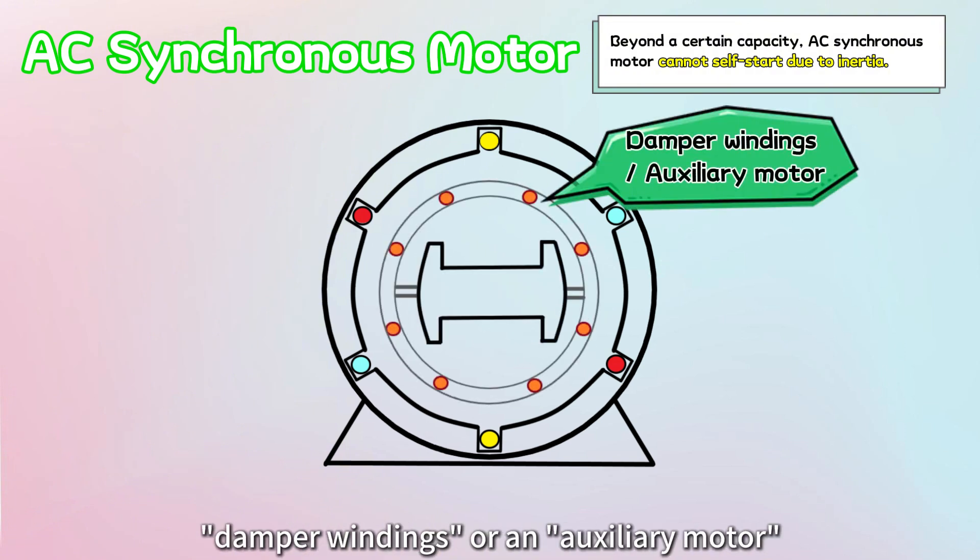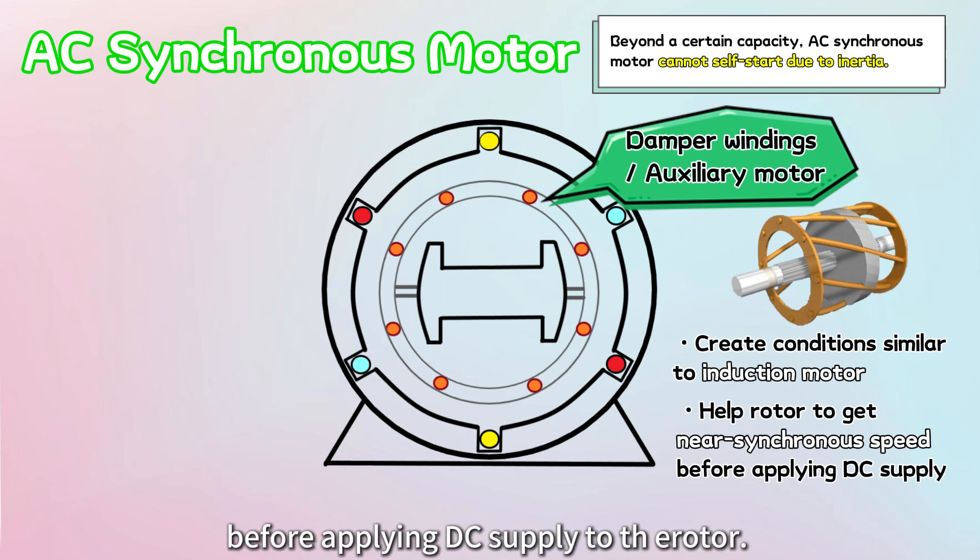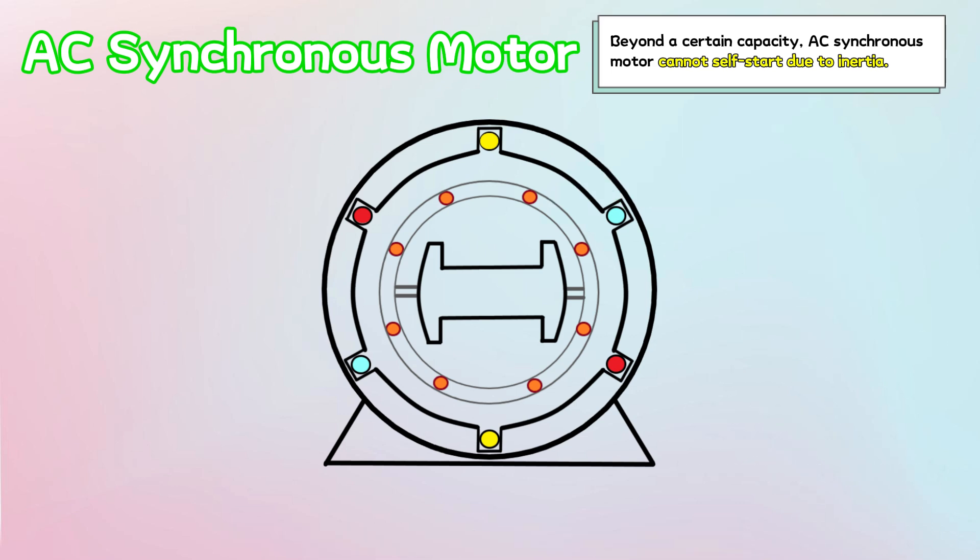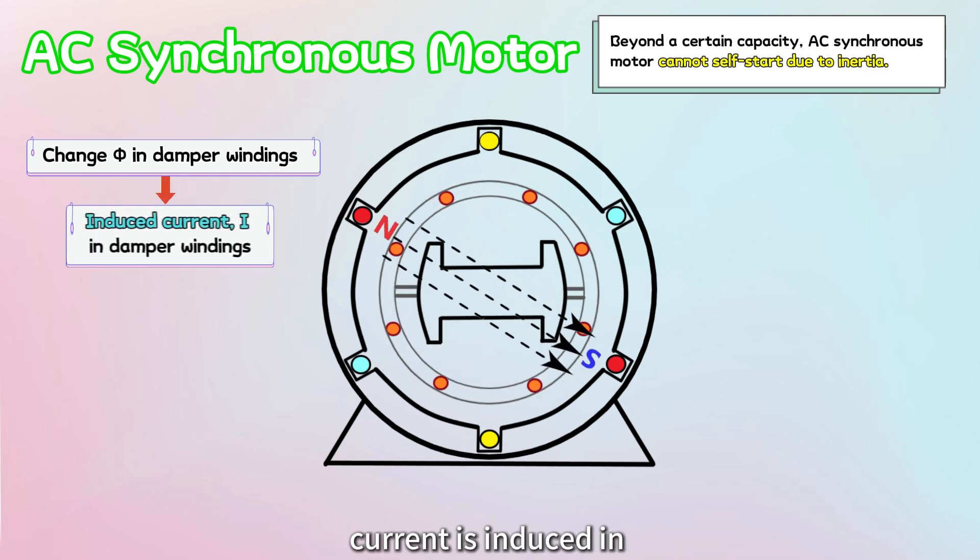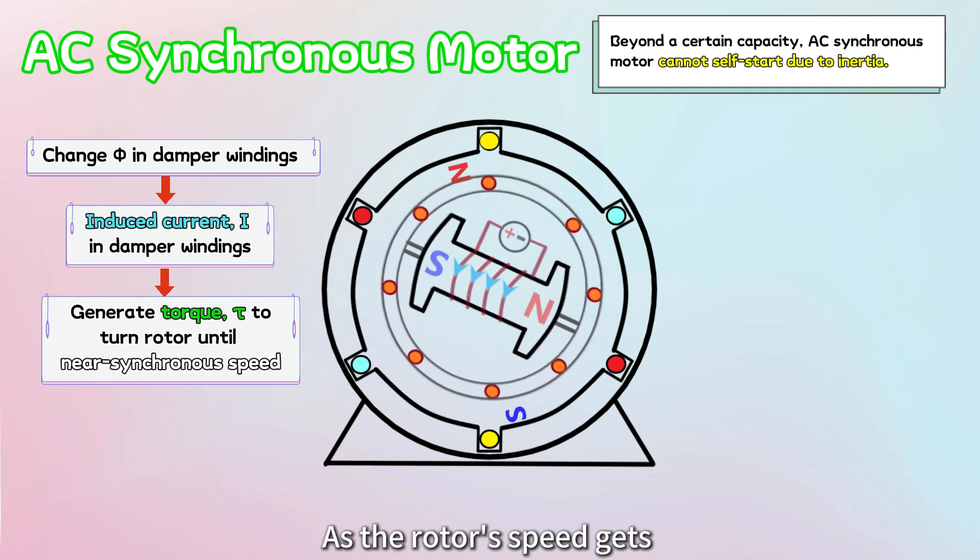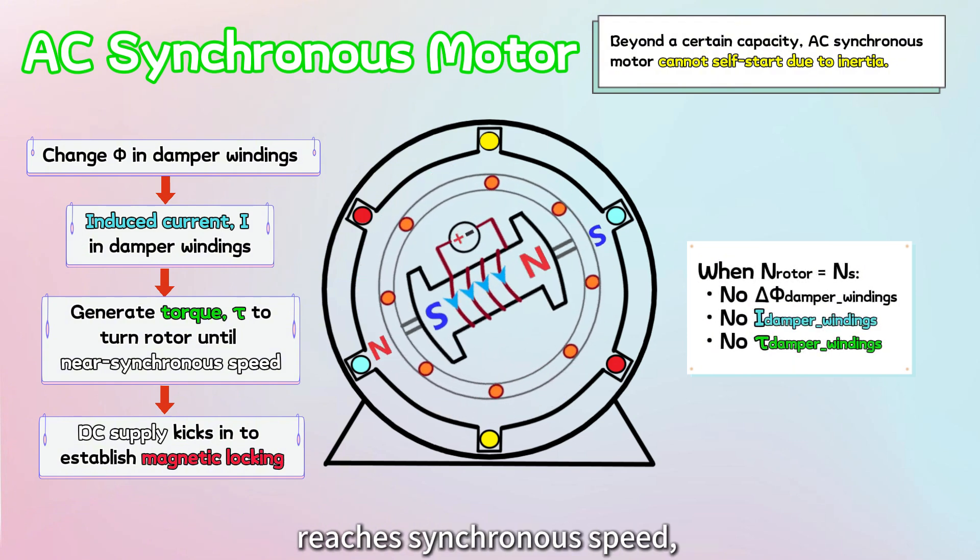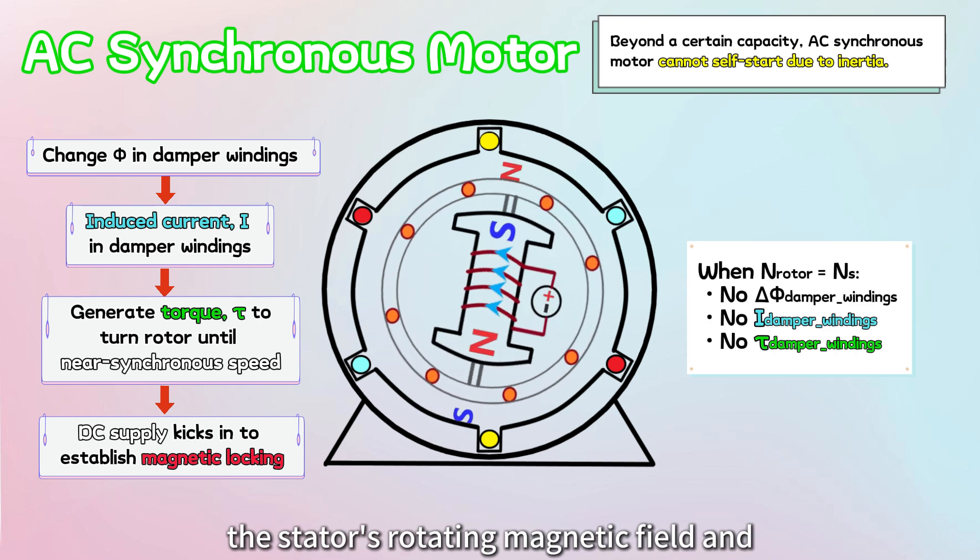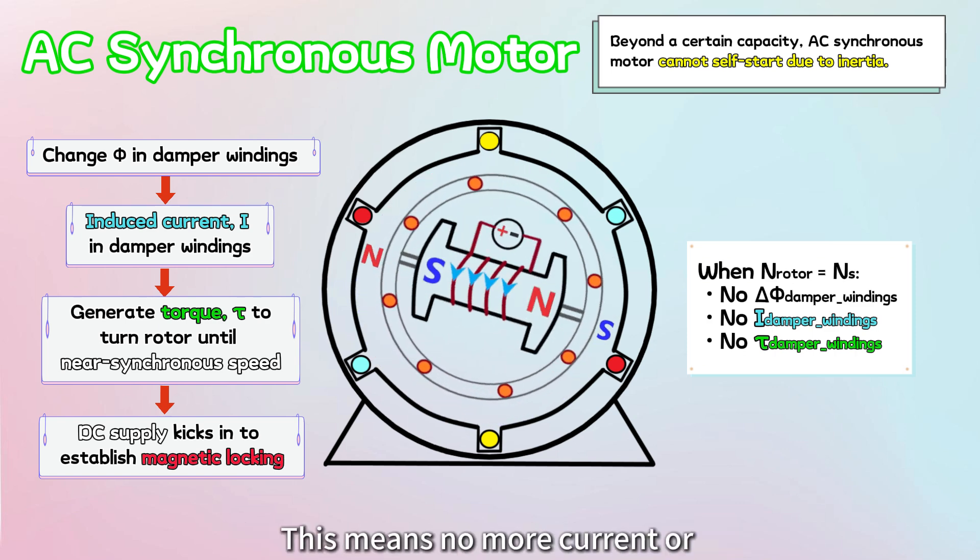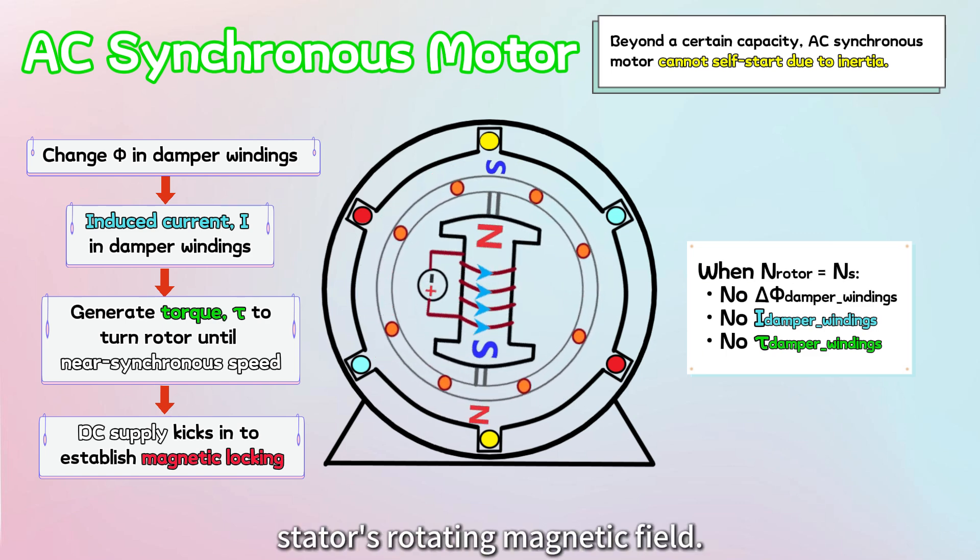This is where clever techniques like damper windings or an auxiliary motor come to the rescue. These methods help create conditions similar to those in an induction motor, assisting the rotor in getting up to near-synchronous speed before applying DC supply to the rotor. Here's how it works. Extra short-circuited windings are added to the rotor. When the stator's rotating magnetic field is applied, current is induced in these short-circuited windings, generating the torque needed to turn the rotor in one direction. As the rotor's speed gets closer to synchronous speed, the DC supply kicks in to establish magnetic locking. Once this happens and the motor reaches synchronous speed, there's no relative motion between the stator's rotating magnetic field and the damper windings. This means no more current or additional torque is induced in the damper windings, and the rotor keeps spinning, perfectly locked with the stator's rotating magnetic field.